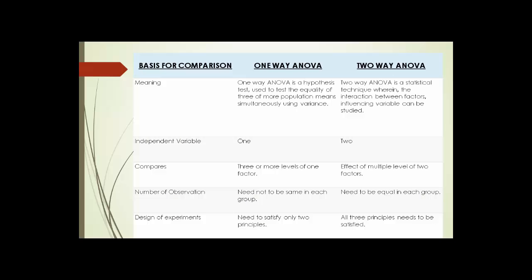If we look at a comparison between the one-way and two-way ANOVAs, the differences typically lie in the fact that you're dealing with two independent variables in a two-way ANOVA. Also, in the compares row, you can see that for a one-way ANOVA, it's three or more levels of one factor, and on a two-way ANOVA, it only has to be the effect of multiple levels of two factors.